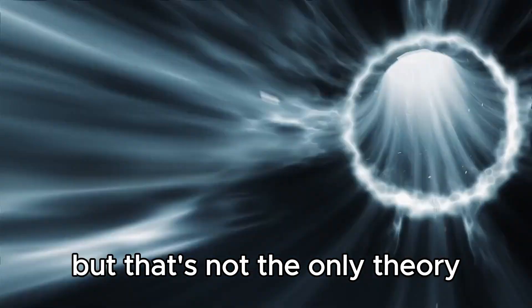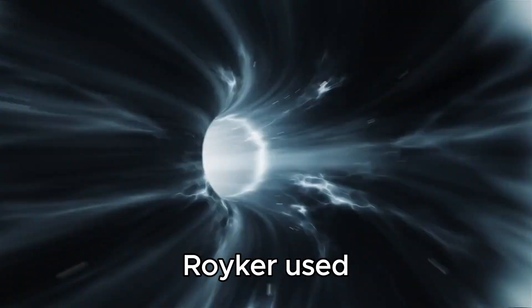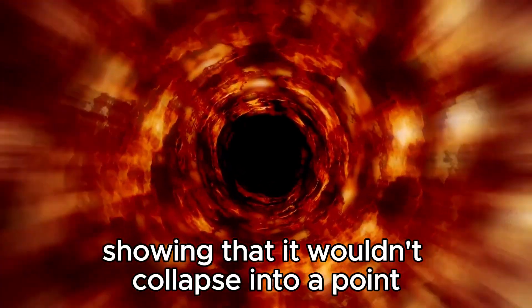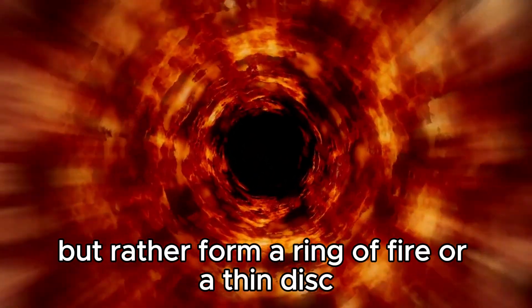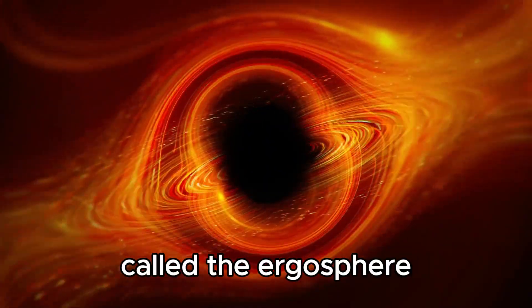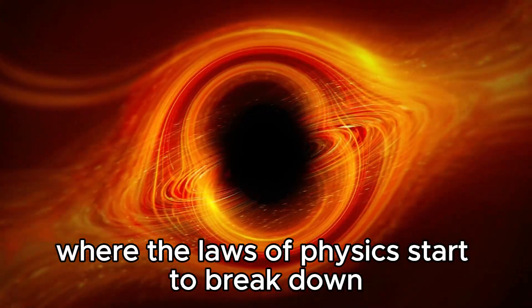But that's not the only theory. In 1963, New Zealand mathematician Roy Kerr used Einstein's equations to describe a spinning black hole, showing that it wouldn't collapse into a point, but rather form a ring of fire or a thin disk. This spinning disk of matter, called the ergosphere, is the region surrounding the black hole where the laws of physics start to break down.